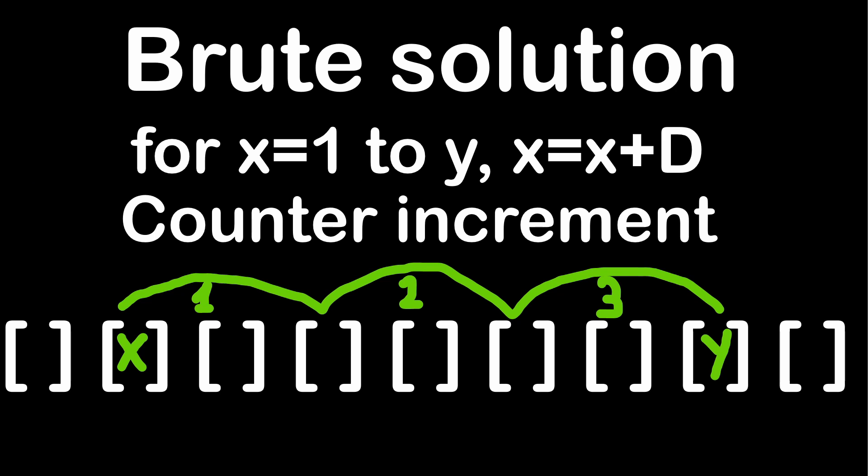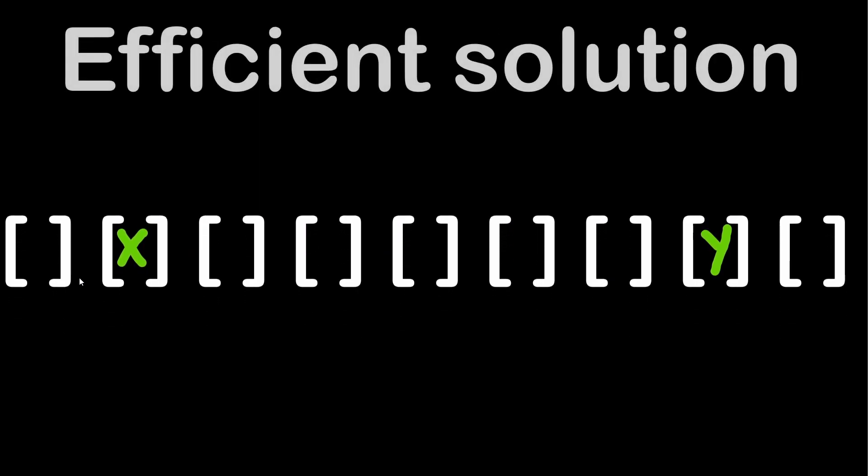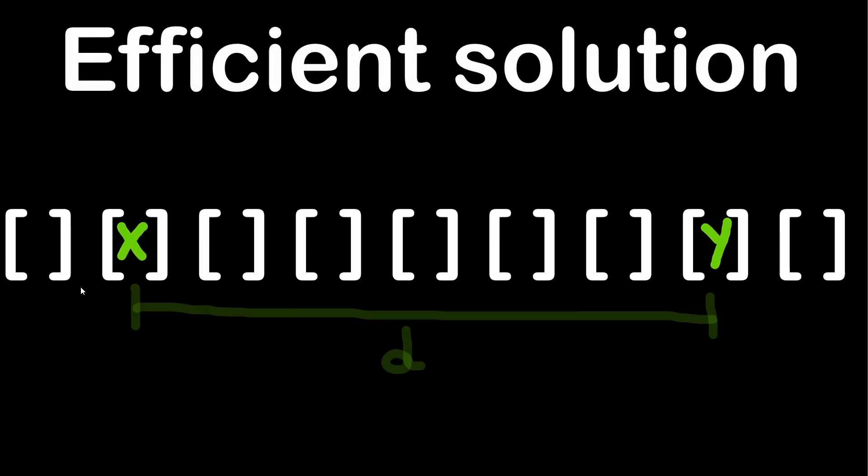A more efficient way to do this is by considering the distance between the two positions x and y, I called it small d here, and dividing this distance by the distance covered in one jump, the capital D.